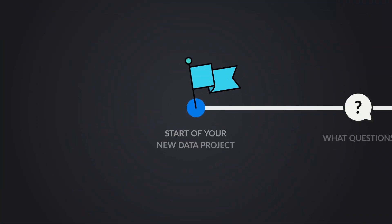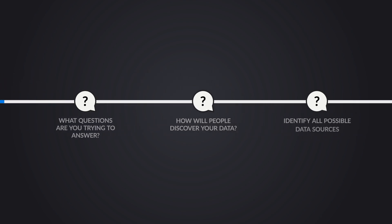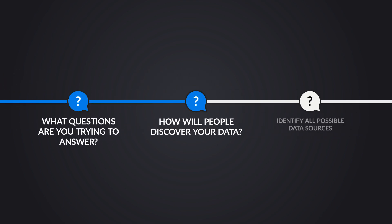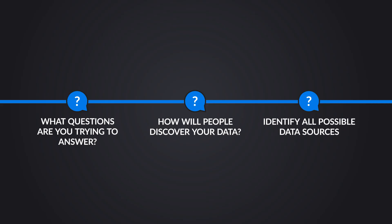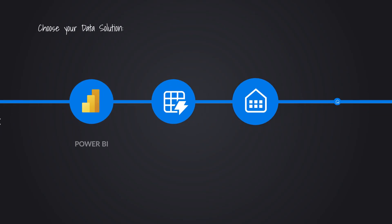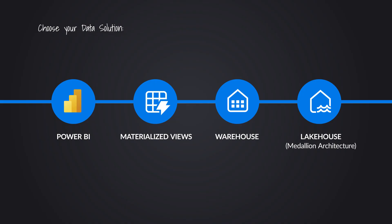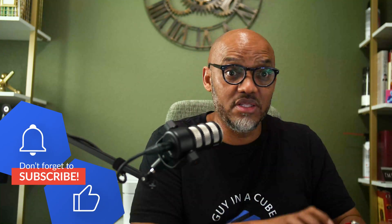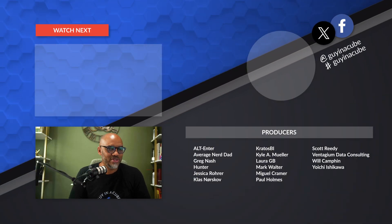When designing your data solution, there are three key things to think about: what questions are you trying to answer, how are people going to discover the data, and the type and number of data sources you're connecting to. Once you have that worked out, it should help you pick from these four choices — or maybe you come up with a different choice. I'm going to do videos on each one of these solutions and dive deeper into the advantages and disadvantages, so stay tuned — we'll put them in a playlist.